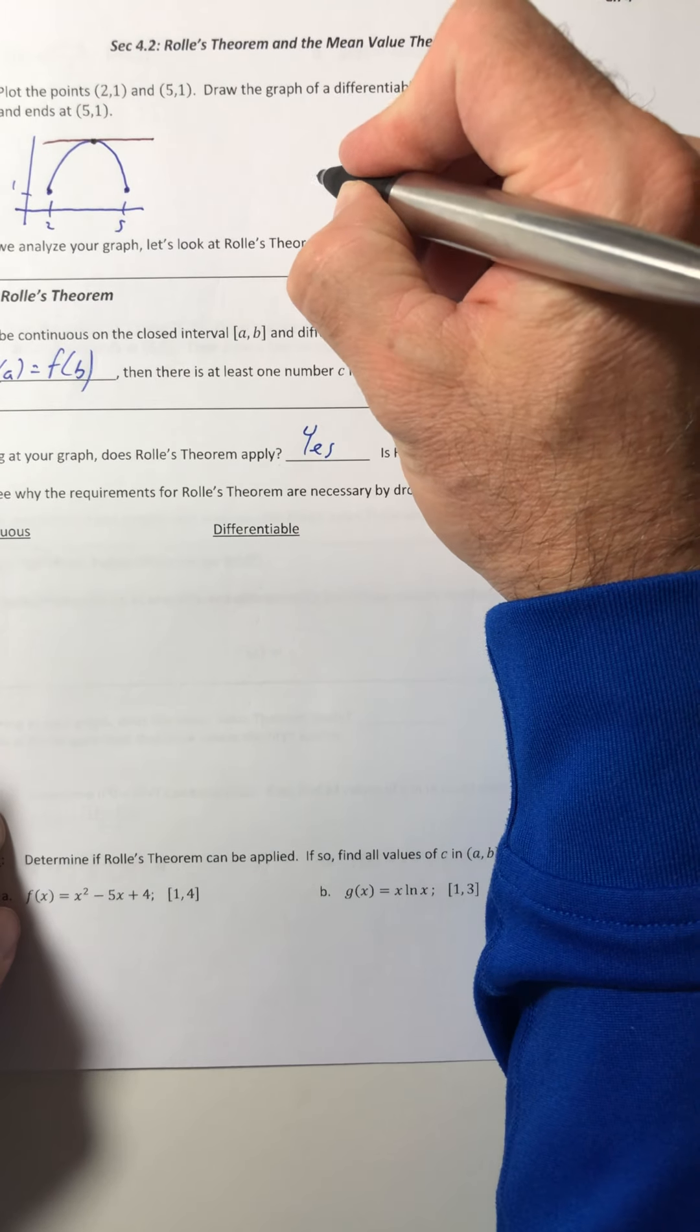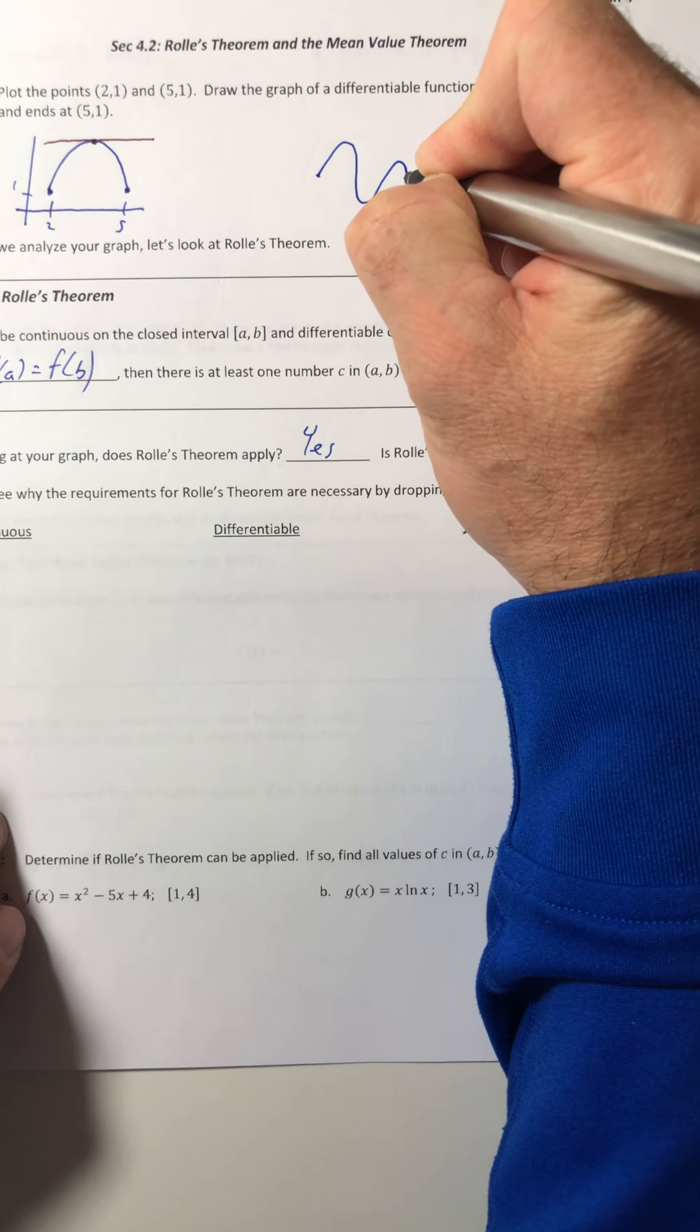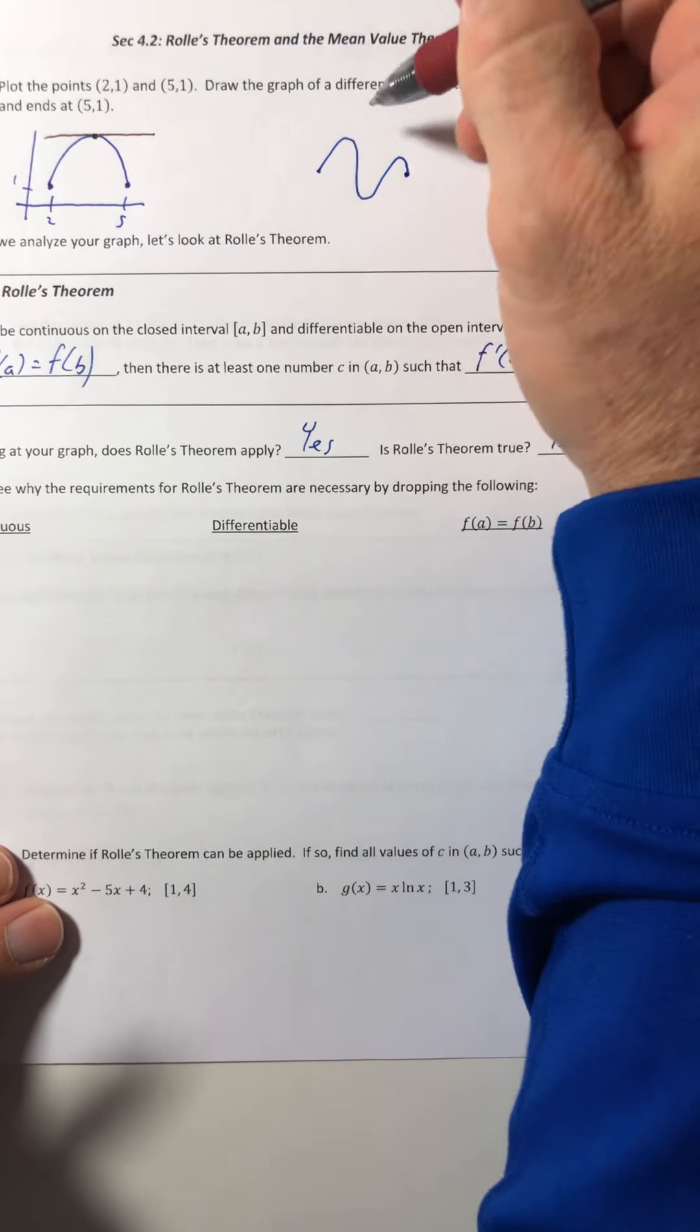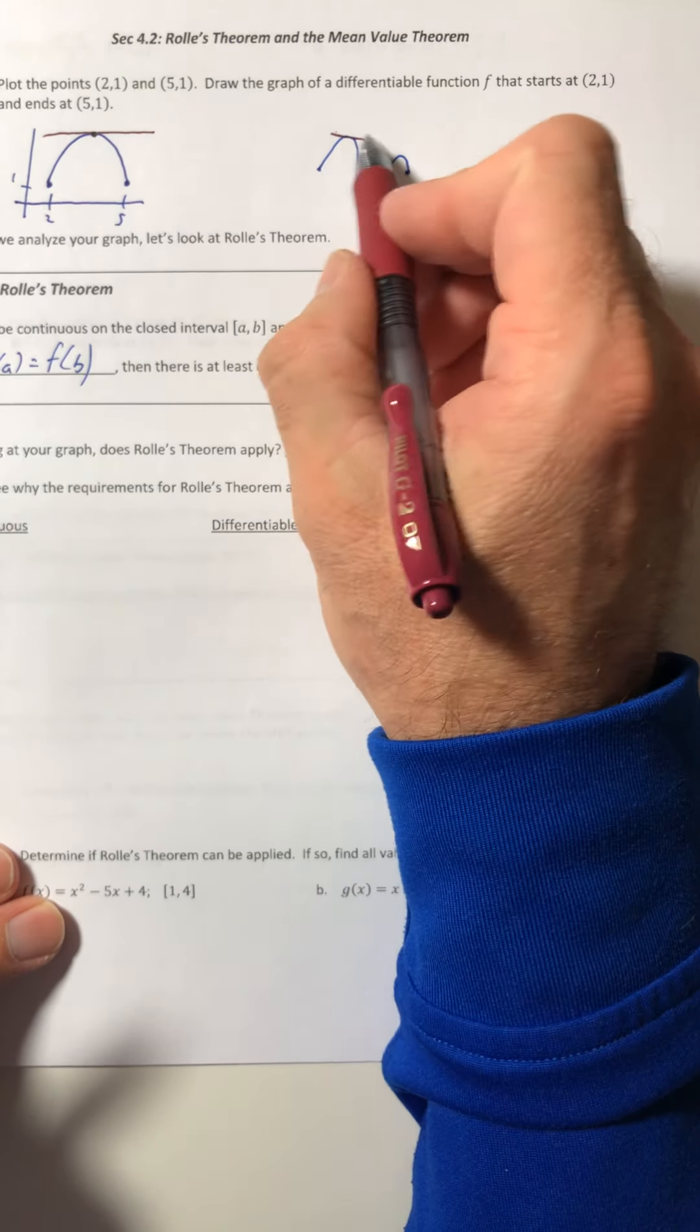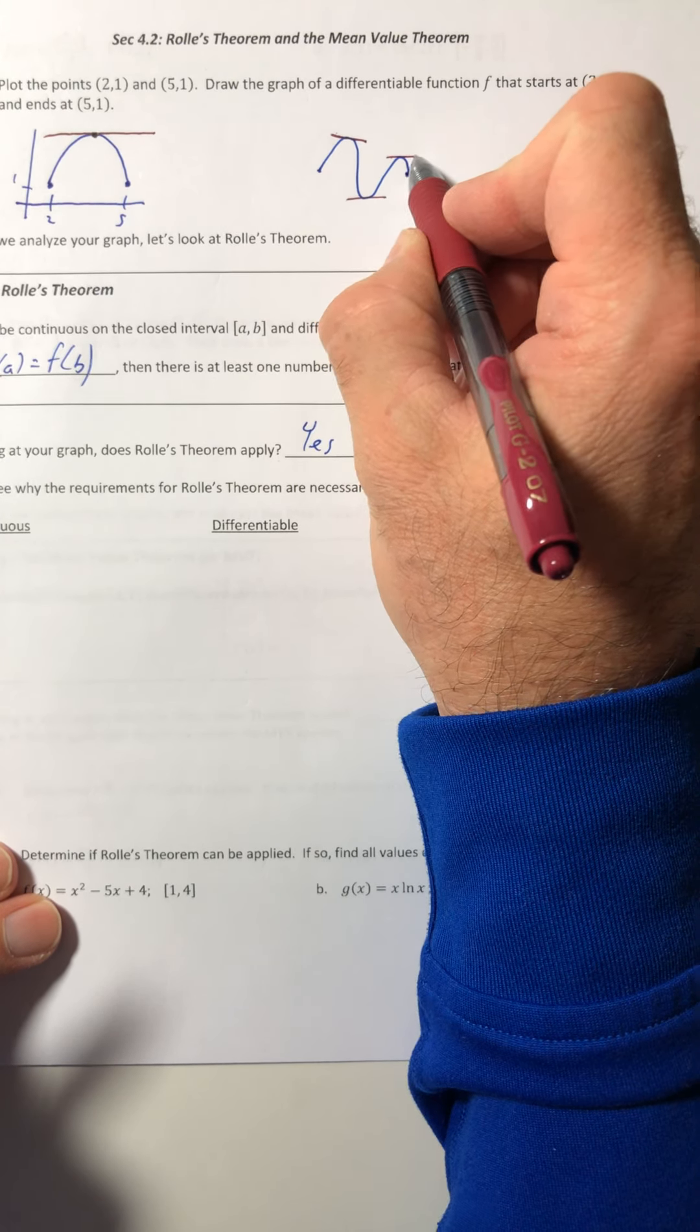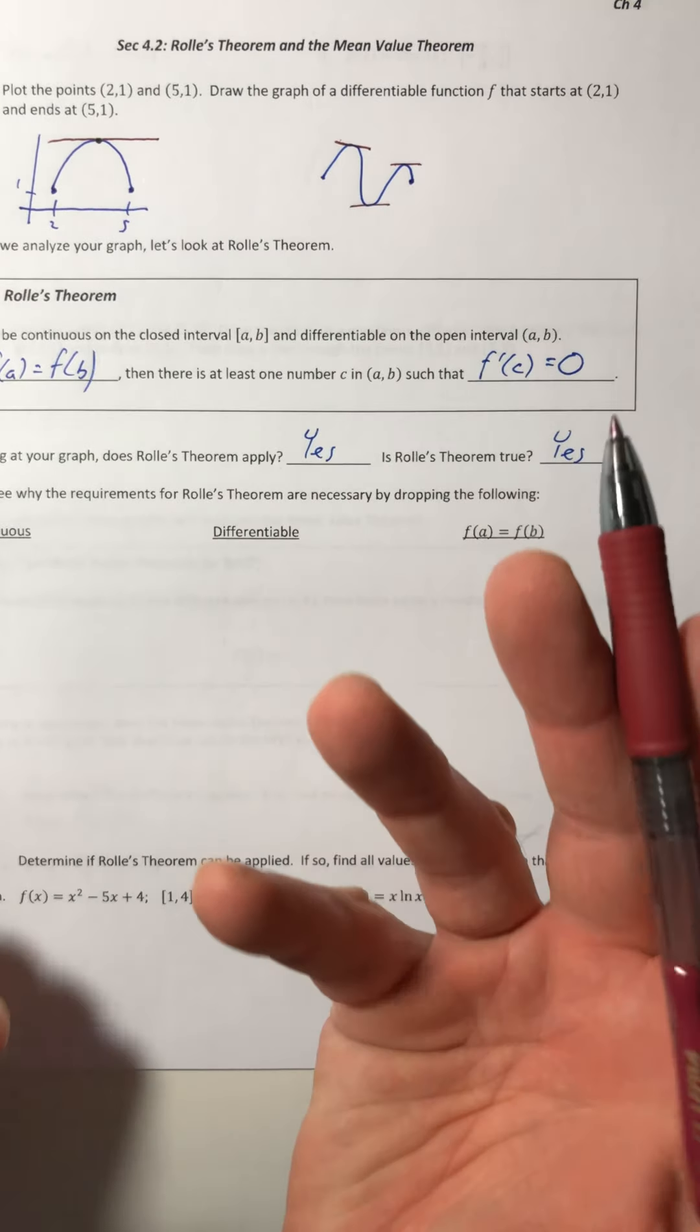Now, you might have drawn something different. Like, you could have gone like that. And this one has three. That's one there. That's supposed to be horizontal, but it's not. One here. And another one there. So the theorem just guarantees one place, but there might be more, depending on your graph.